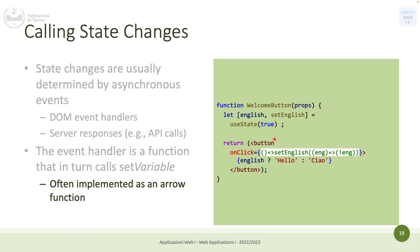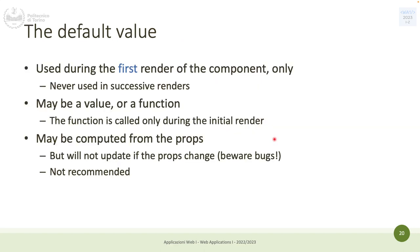If the logic is short you can implement it directly within the onclick: onclick arrow function, setEnglish to whatever. It's the same thing, just skipping an explicit function definition. When you set up a state with useState, you provide a default value — true, false, zero — and this default value is used only during the first render of the component; it's never read in successive renders.